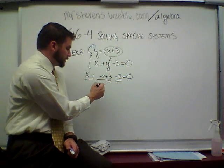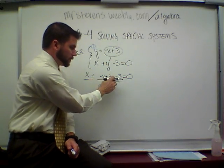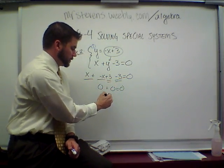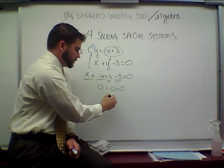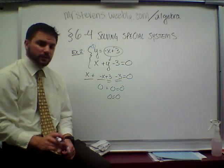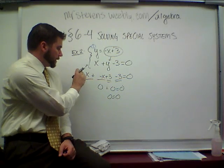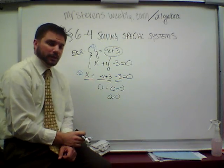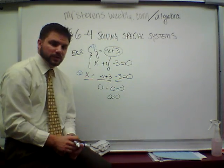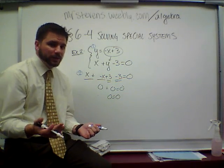x and negative x gives me 0. 3 and negative 3 gives me 0. So 0 plus 0 equals 0. Step 2 was to plug it in. Step 3: well, 0 equals 0. When does 0 equal 0? Always.